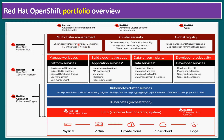In addition to OpenShift Platform Plus and ACM, we also have ACS — Advanced Cluster Security — and a global registry feature called Quay. All of these are part of the OpenShift portfolio overview. In the interest of time, I'm focusing on one component: Advanced Cluster Management for Kubernetes.